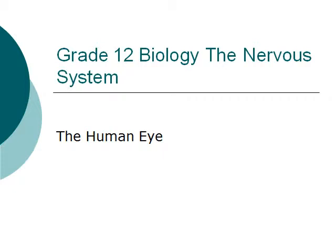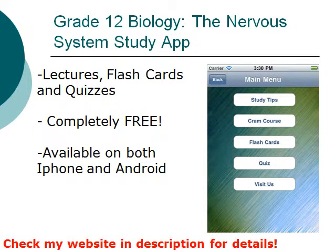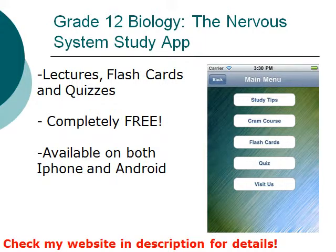Welcome to the Grade 12 Biology: The Nervous System course. Today I am going to talk about the human eye. If you have not done so already, I highly recommend you download our free mobile app called Grade 12 Biology: The Nervous System Study App. A link is provided in our YouTube description. It has lectures, flashcards, and quizzes related to this topic. It is completely free and available on both iPhone and Android.